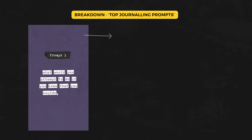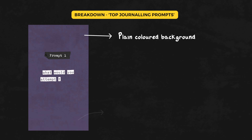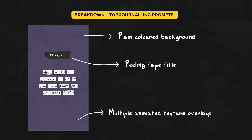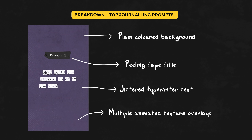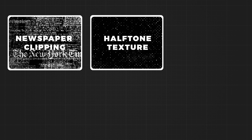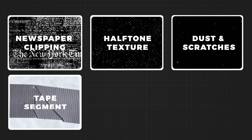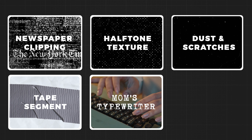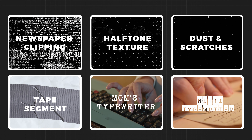To break the sequence down, you can see that Ali uses a plain coloured background with multiple animated texture overlays. On top of this we have an appealing tape title and a text section which animates in much like a typewriter and also has a jitter effect. To recreate this, the assets I'm going to use are: a newspaper clip-in, an animated halftone texture, a dust and scratches overlay, an image of a tape segment, the Mum's Typewriter font for the title, and the Nitty Gritty Typewriter Cameo font for the main text section.